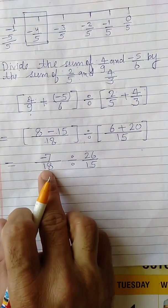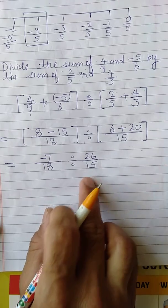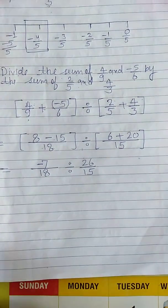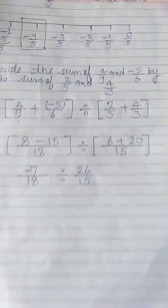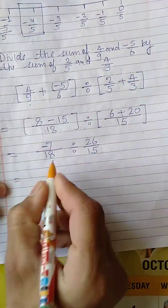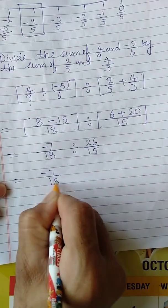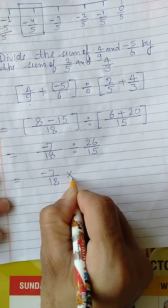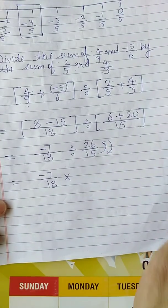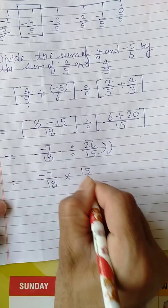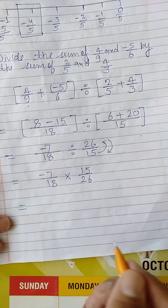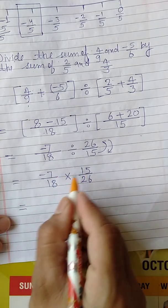Now we cannot divide a rational number by rational number directly, so what to do here? We will use reciprocal, means additive inverse of the number. How? See: minus 7 upon 18 multiply. Just change this - this denominator will become numerator and numerator will become denominator. This will be 15 upon 26.